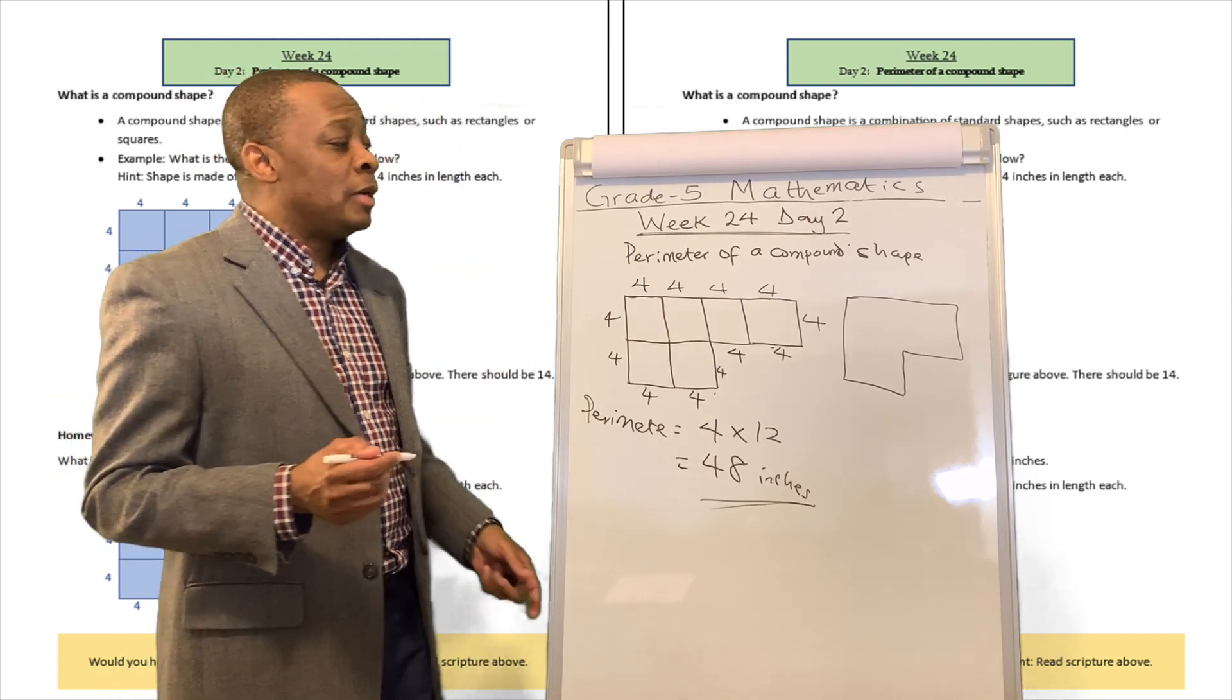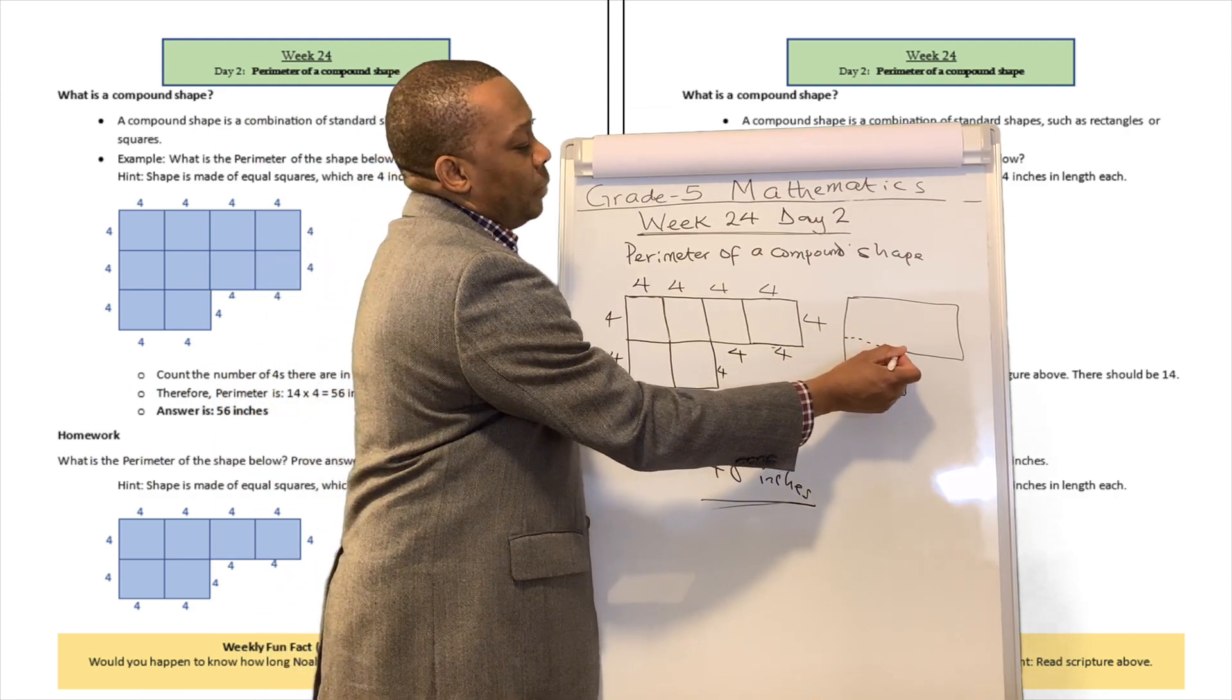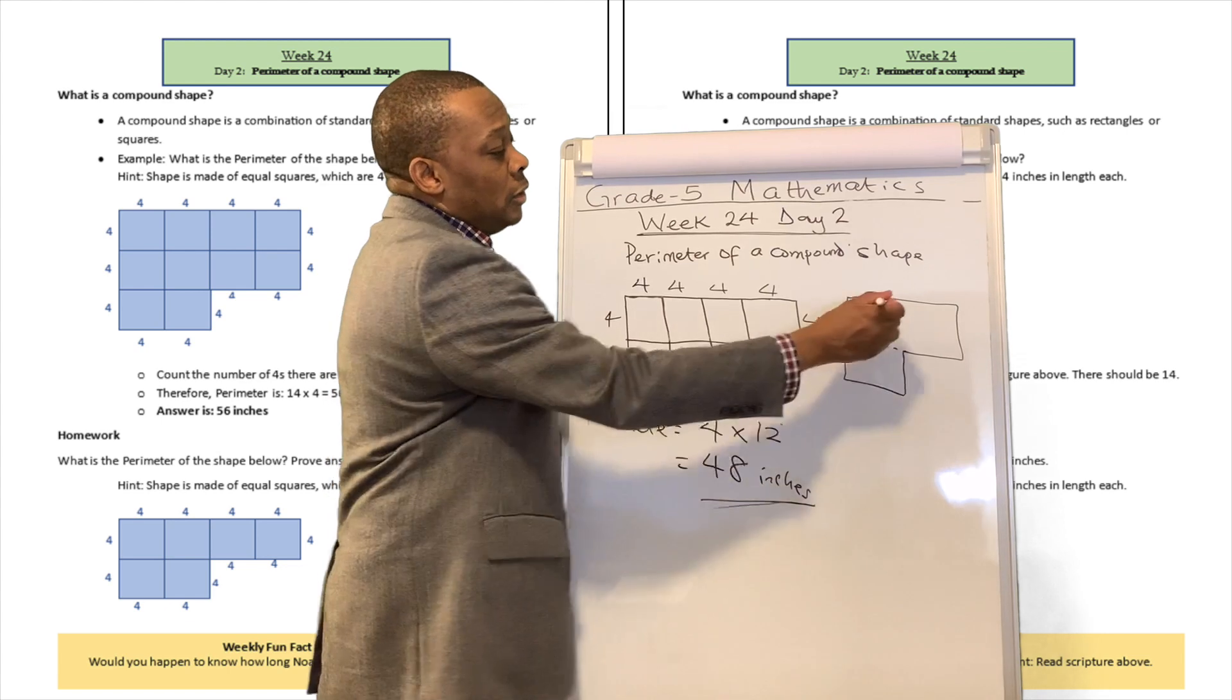When you have the perimeter of a compound shape, your first protocol is to try to break down the shape into regular shapes. So, for example...